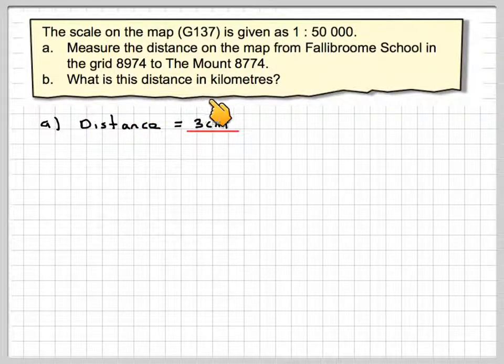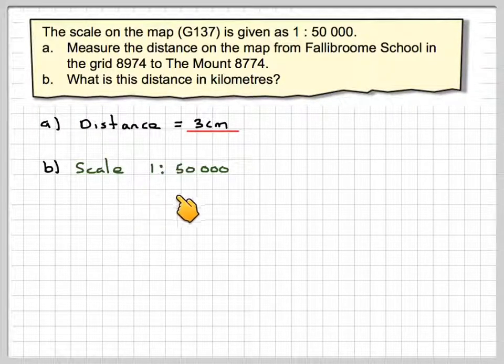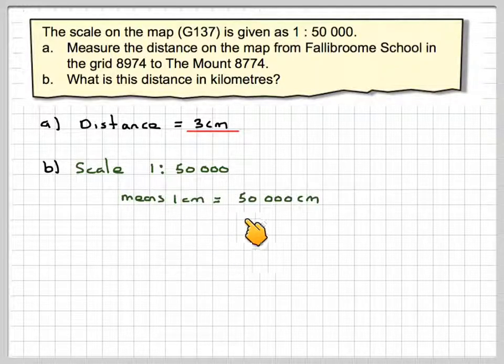Now I've got to work out the actual distance in kilometers. So the scale is 1 to 50,000. What does that actually mean? That means that 1 centimeter is 50,000 centimeters. But that's not really much good because I need to give the answer in kilometers. So let's just think about it.